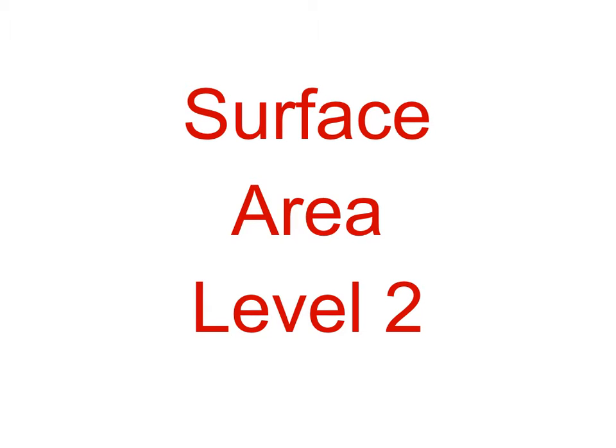In this video we're going to apply what we learned about nets last week. When we were working on our project we talked about making the nets which is the pattern that you draw on the paper, which you cut out and then folds up into a solid. We're going to look at problems about drawing the nets and then finding the surface area. This level 2 we're going to focus on two basic shapes, cubes and rectangular prisms.